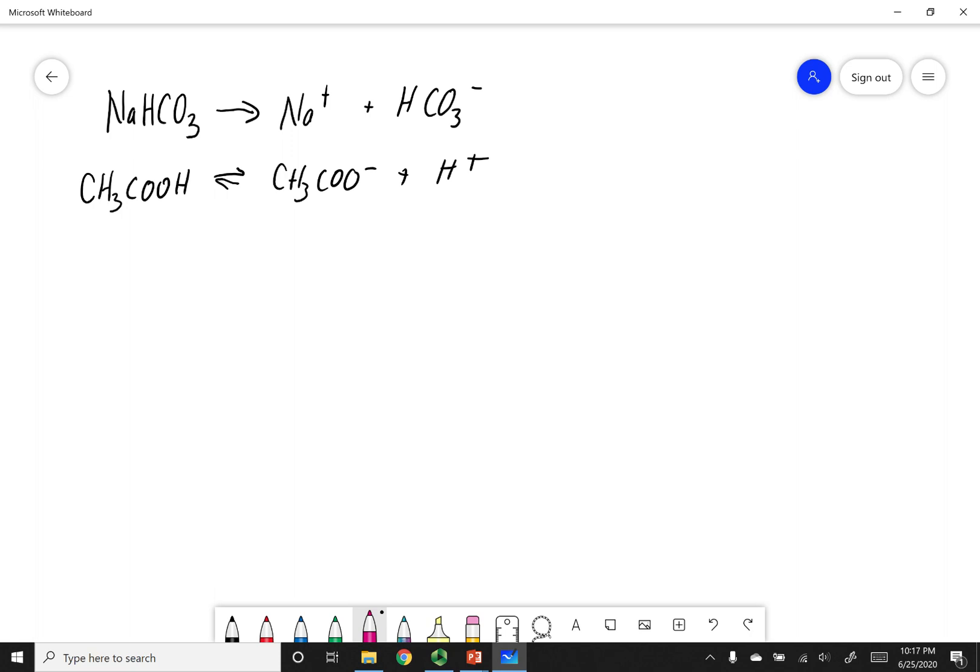The next thing we're going to do is identify the major species. Remember what these arrows mean. If I write a hard arrow, what I'm implying is that the reaction is product favored. So I don't have NaHCO3 in solution. What I have are these two species. This has completely broken apart.